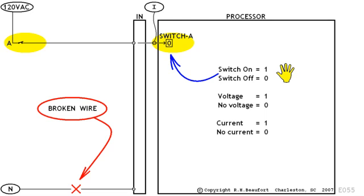Here we've got a problem. The neutral wire is broken. And that's why the bit contains a zero, even though the switch is in the on position.